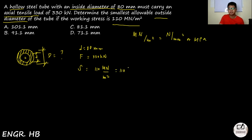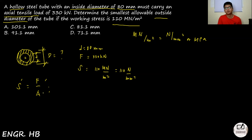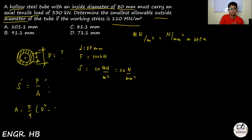This is a normal stress problem. The formula is S = F/A, where A is the cross-sectional area and F is the applied force. Both S and F are given, so we solve for area — from which we get the outside diameter. Since the tube is hollow, the cross-sectional area is π/4 × (D² − d²), the difference of the squares of the two diameters.